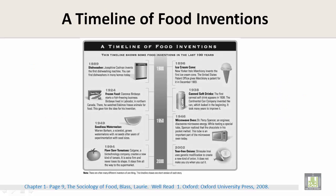Take a look at this — a timeline of food inventions. This timeline shows some food inventions in the last hundred years, such as the dishwasher in 1889 and frozen food in 1924.